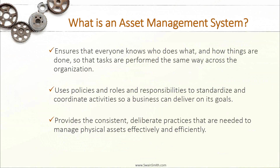An asset management system ensures that everyone knows who does what and how things are done, so that tasks are performed the same way across the organization. Establishing consistent and disciplined practices is an output of implementing a management system for your assets. It uses policies and roles and responsibilities to standardize and coordinate activities so the business can deliver on its goals — tying asset management activities to the accomplishment of organizational objectives. An asset management system provides the consistent, deliberate practices needed to manage physical assets effectively and efficiently.